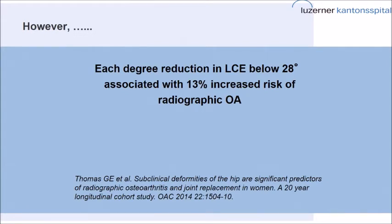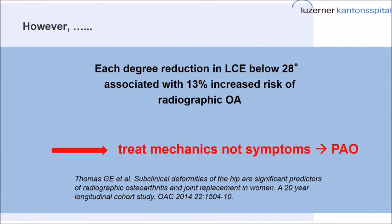We also have to keep in mind we shouldn't only treat on the short term. Thomas showed that each degree reduction in LCE below 28 degrees is associated with a 13% increase in risk of radiographic osteoarthritis within 20 years. So it's not only a short-term decision — even a small hip which is stable can have high shear stresses across the joint because the joint-bearing area is very small. If we are not sure, it probably makes more sense not to treat the symptoms but to treat the mechanics and do some redirection of the acetabulum. Thank you very much.